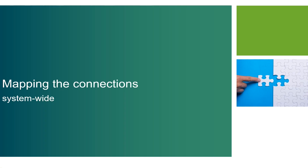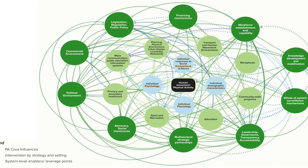Finally, let's map the connections systems-wide. Here we have the whole of systems map for physical activity in Australia, which brings together the core influences, strategic settings and interventions, and enablers and leverage points.